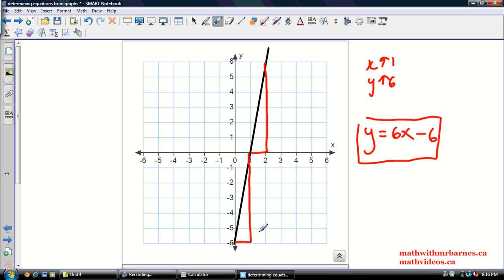That's because this point down here is 0, negative 6. So, you can see, we had y is equal to 6x. So, 0 times 6 is 0. We should get minus 6. So, we got to subtract 6 from that.